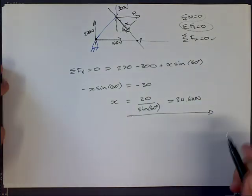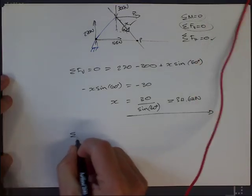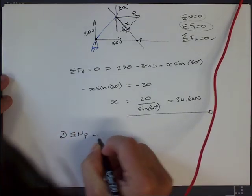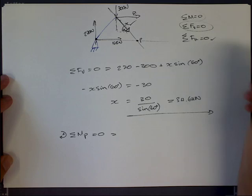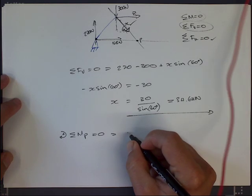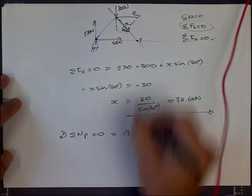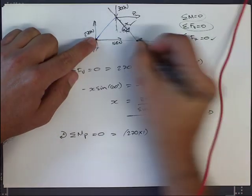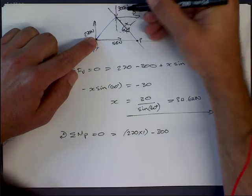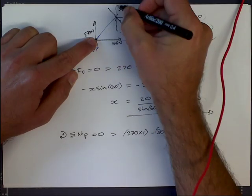I'm going to sum up the moments around this new point P in a positive clockwise direction, and those must all equal zero. It's going to be 270 times 1, which is the perpendicular distance from P to 270. Then 300, which is anti-clockwise because 300 is spinning around P anti-clockwise, multiplied by 0.5 because that's its perpendicular distance from point P. The last one is 0.86, the height from P to z.